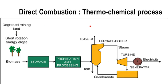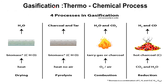In direct combustion — a thermochemical process — the biomass is burned in a boiler to produce high pressure steam. This steam is injected into a steam turbine, where it flows over a series of turbine blades causing the turbine to rotate. The turbine is connected to an electric generator, which turns and produces electricity.